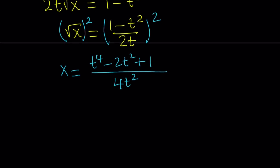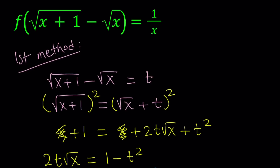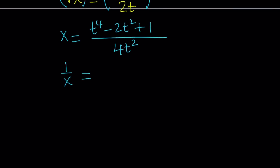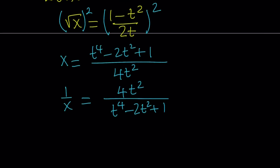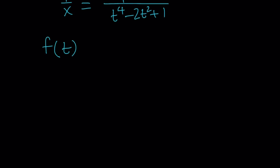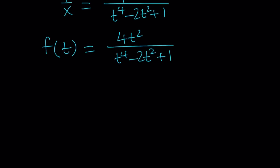Our goal is to find f of x, and the original expression has 1 over x on the right-hand side. So let's find 1 over x — we definitely don't want t to equal 0. Flipping the expression for x, we get 1 over x equals 4t squared divided by t to the fourth minus 2t squared plus 1. Since we set the expression inside the parentheses equal to t, we have f of t equals that result. Note that t cannot equal 1, as that would make it undefined.